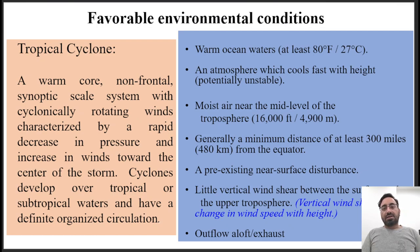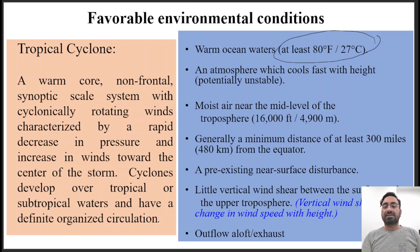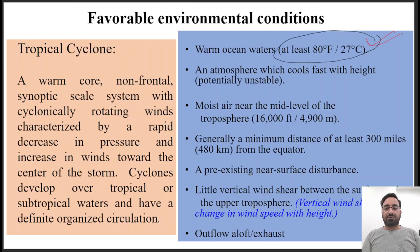A tropical cyclone needs some conditions before it starts forming. For example, the surface temperature of an ocean must be at least 27 degrees Celsius. If the surface temperature is less than 27 degrees, we will not have a cyclone.